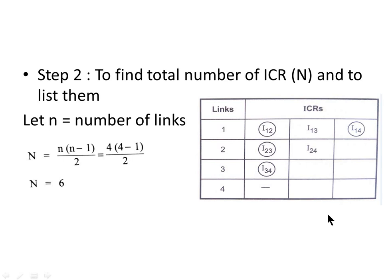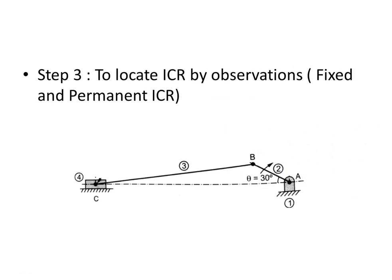Now let us see how to locate these ICRs. Step number 3 is to locate ICRs by observation — the fixed and permanent ICRs. For a link having turning motion, wherever two links intersect, the ICR is located at that point. Link 2 has turning motion with respect to link 1, so I12 is at point A. Similarly, links 2 and 3 have turning motion with respect to each other, so I23 is at point B.